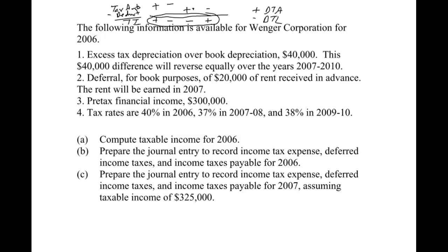Let's look at this example and I'll refer back to the shortcut when we do our reconciliation. We have excess tax depreciation over book depreciation — tax depreciation is greater than book depreciation — which means we have more deductions on our tax return. So that falls in the depreciation column, and the difference is 40,000, reversing equally over the next four years. The second item is a deferral for book purposes of rent received in advance — that's unearned rent — and the rent will be earned in 2007, meaning we're recognizing it on our tax return but not on our books, so we have more income on our tax return.